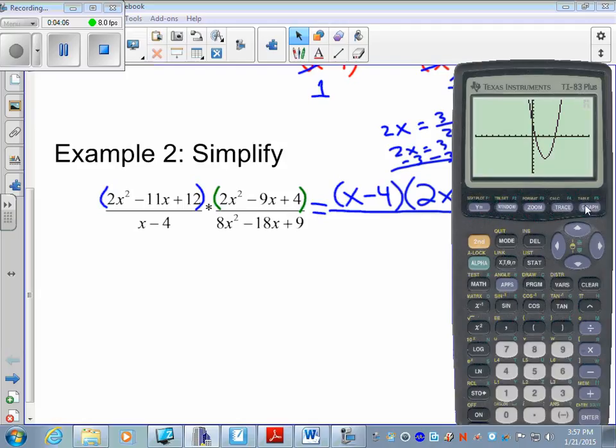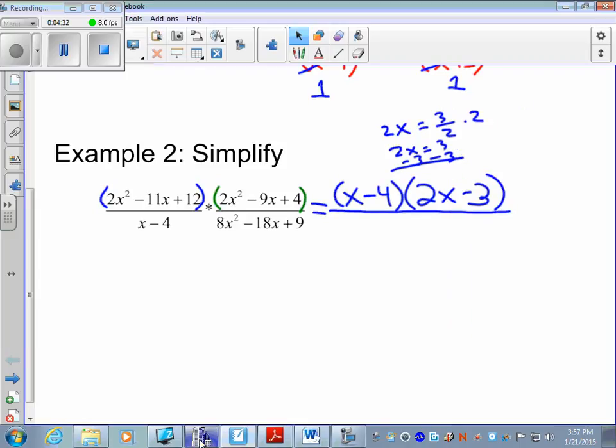Graph it, check the table, there's one at 4. The other one is mysteriously not there, so second trace, zero, left bound. Go to the right of the first x-intercept. We have 0.5 which we all know is 1 half. So factors are x minus 4 and 2x minus 1.